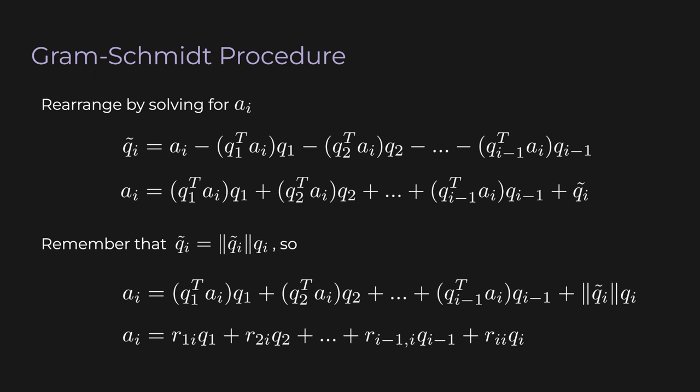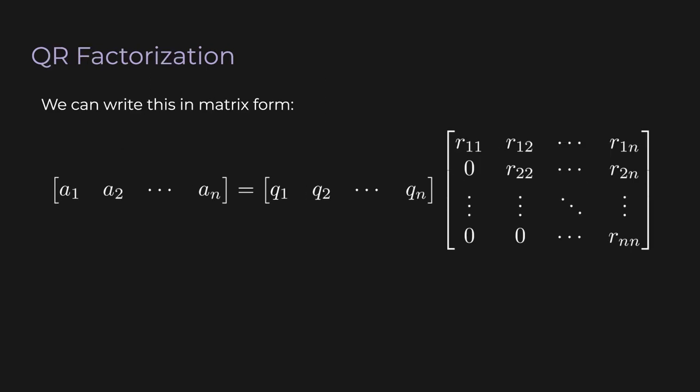The great thing about this notation is that we can write it in matrix form. On the left-hand side, we have a matrix whose columns are the original vectors. And on the right-hand side, the columns of the first matrix are the vectors in the orthonormal basis. And the matrix at the very end hold the coefficients that tell us how to linearly combine the basis vectors to get the original vectors back. When we abstract everything away, we get this very simple matrix equation, A equals QR. And this is called the QR factorization, or the QR decomposition, of A.